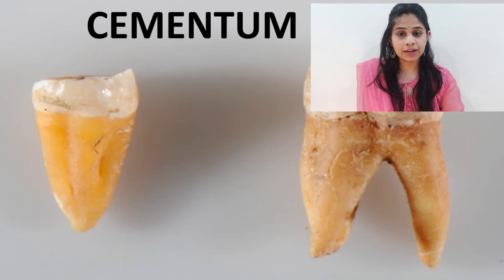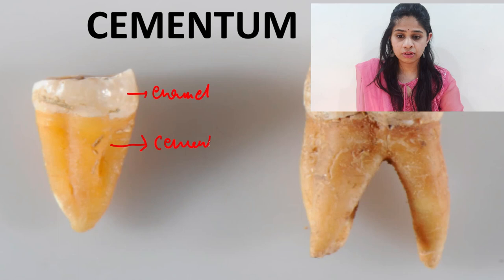This pale yellow mineralized tissue covering the anatomic root is the cementum. Within the enamel and cementum we have a layer of dentine — we have a layer of radicular dentine and the coronal dentine.